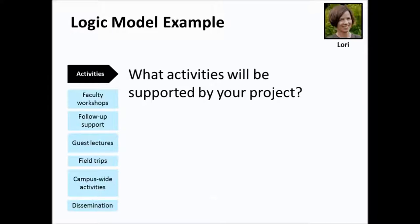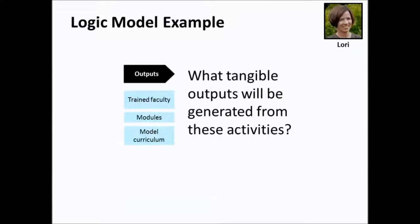In the activities column, you want to convey the main things you're going to do with your grant dollars. Here in this example we have things like workshops, lectures, and dissemination. I find it useful to include the outputs in the model — these are the tangible things generated by your activities, things you can see, count, and document. In this example we have trained faculty, modules, and a model curriculum.